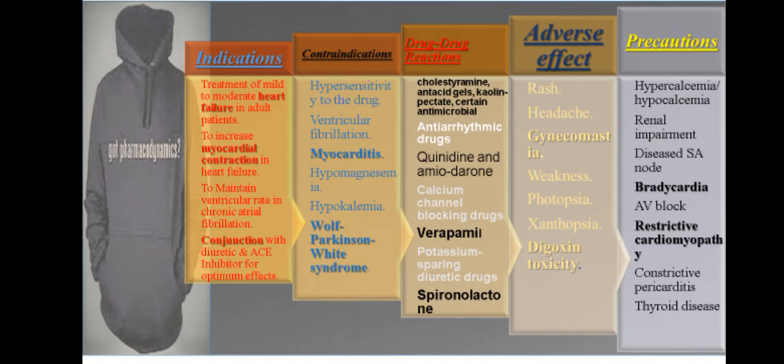Indications of digoxin: it is indicated for the treatment of mild to moderate heart failure in adult patients; to increase myocardial contraction in children diagnosed with heart failure; and to maintain control of ventricular rate in adult patients with chronic atrial fibrillation. In adults with heart failure, when clinically possible, digoxin should be administered in conjunction with a diuretic and an ACE inhibitor for optimum effect.